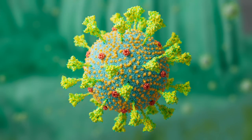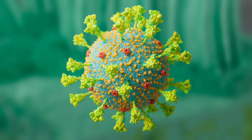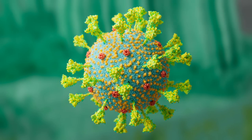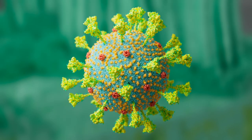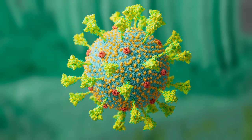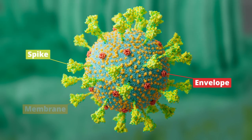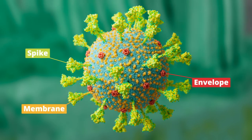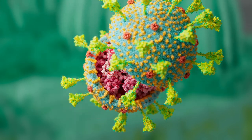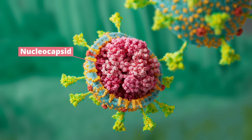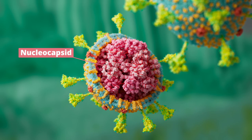The virus itself is deceptively simple. It consists of only a few parts, but together these parts create a highly effective virus. It has an outer membrane with three types of proteins on it – spike, envelope, and membrane proteins. Inside the virus, an assembly of nucleocapsid proteins hold together its genetic material – a single strand of viral RNA.